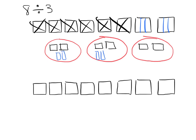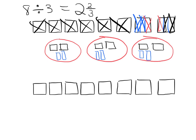So these 2 thirds go to the first person, these 2 thirds go to the middle person, and these last 2 thirds go to the third and final person. So we can see that each person gets 2 wholes and 2 thirds — 2 and 2 thirds. So that's the first way.